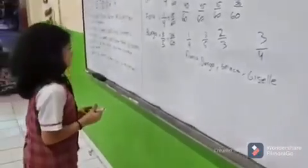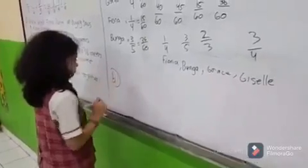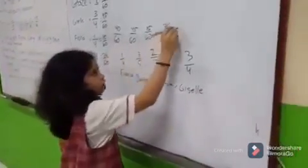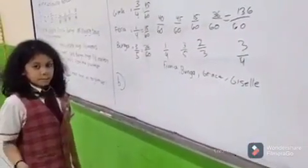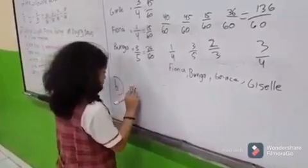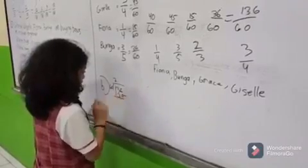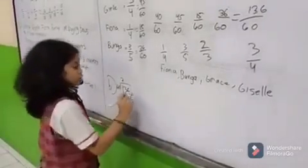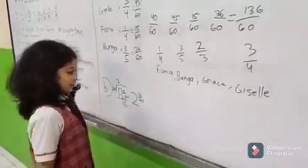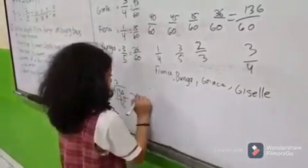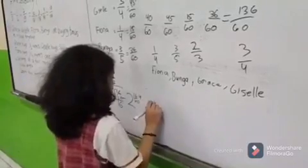Now let's get to part B: count the length of their bows all together. All of these in total is one hundred and thirty-six over sixty. Let's convert it to a mixed number to simplify it. One hundred and thirty-six divided by sixty is two remainder sixteen, so the answer is two and sixteen-sixtieths. We can still simplify by dividing by four, giving us two and four-fifteenths.